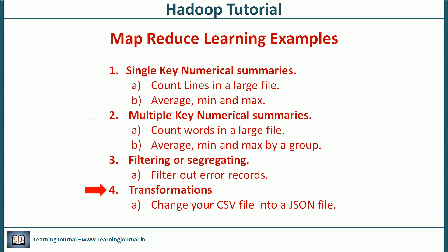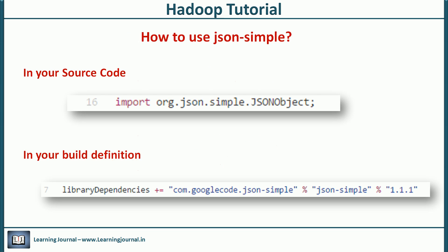In this session, we will further look into the following requirement. In this example, we want to transform our CSV file into a JSON file. The first thing that you may need is a JSON library package. I am using simple JSON, so I import this package in my source code and add a new dependency to my build file. With these two changes, I'll be able to create a JSON object.